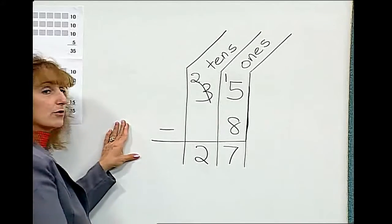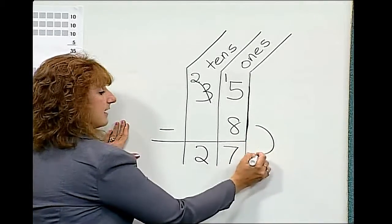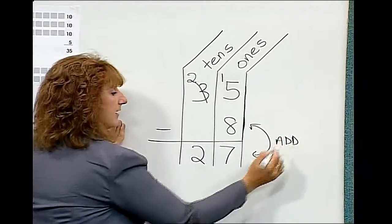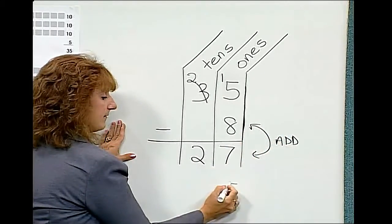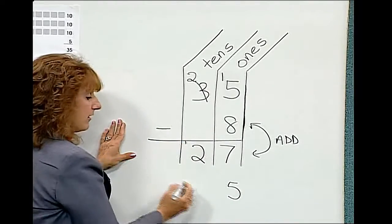Once we get our difference, we're going to check our answer by adding the eight and the twenty-seven. Eight plus seven is fifteen. We put down the five, carry the one.